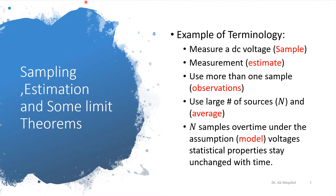With n samples over time, under the given model, we assume the voltage's statistical properties stay unchanged with time. If they change with time, then the process of observation should consider this change. In many cases in real life, we develop a model where we assume that things do not change with time, and this is why we take the measurements at different instances in time. These terms — sample, estimation, observation, average, and model — could have some overlap, but they have distinct meanings.